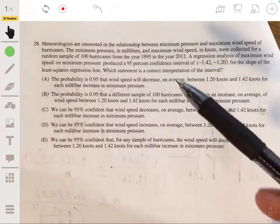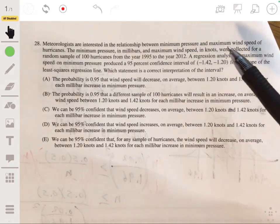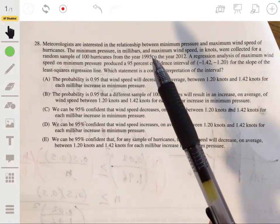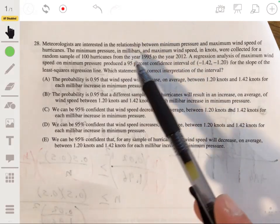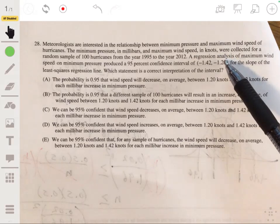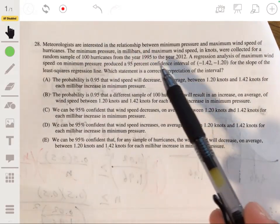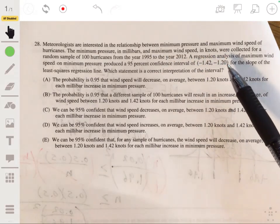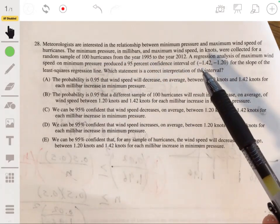All right, problem 28. Okay, so we've got meteorologists that are interested in the relationship between minimum pressure and maximum wind speed of hurricanes. The minimum pressure in millibars and maximum wind speed in knots were collected for a random sample of 100 hurricanes from the year 1995 to the year 2012. A regression analysis of maximum wind speed on minimum pressure produced a 95% confidence interval of negative 1.42 to negative 1.2 for the slope of the least-squared regression line. Which statement is the correct interpretation of the interval?